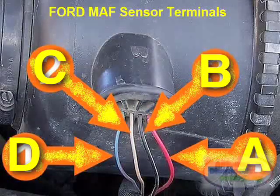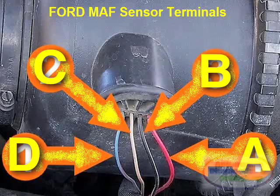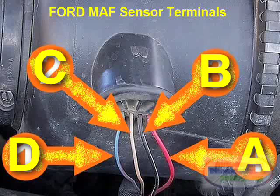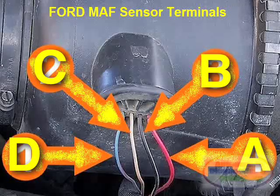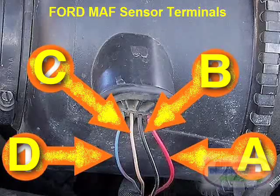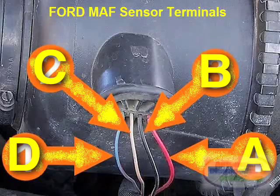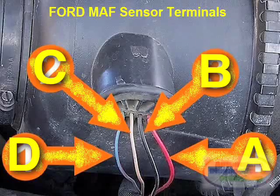Here are the circuit descriptions. Letter A: Power or 12-volt circuit. Letter B: Ground circuit. Letter C: Sensor ground circuit, provided by the PCM. Letter D: Ford mass air flow sensor signal.